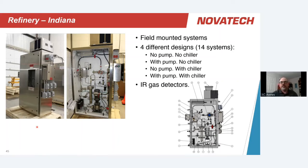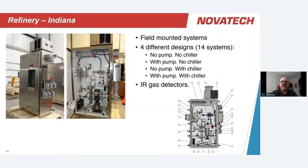Here's another example where a client undertook a project to evaluate all of their once-through cooling water systems. They purchased 14 of these sparger systems in a variety of configurations depending on whether pressure was involved, what the water temperature was. This is the most complex configuration shown — it required a pump and a chiller, necessitating an air-conditioned and heated cabinet, mounted in the field. But other than the pump and chiller, the rest is exactly the same as what we saw before — still just a gas detector providing the detection limits they needed.